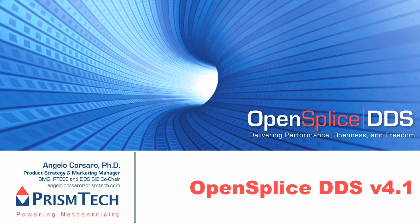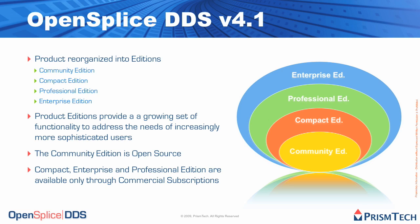The version that we are making available to you is the latest and greatest, OpenSpliceDDS version 4.1. This version has been completely reorganized around the concept of editions. We are going to have four different editions: the version you can download from OpenSpliceDDS.org, which we call the Community Edition, and the Compact, Professional and Enterprise Editions, which are commercial editions.